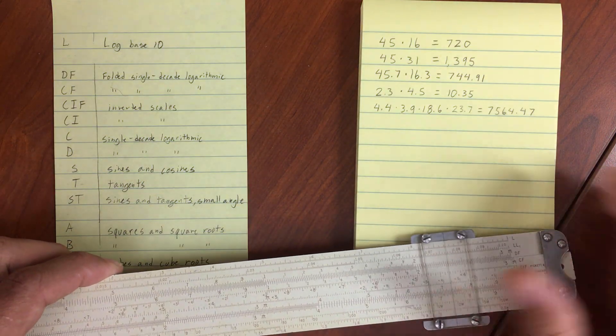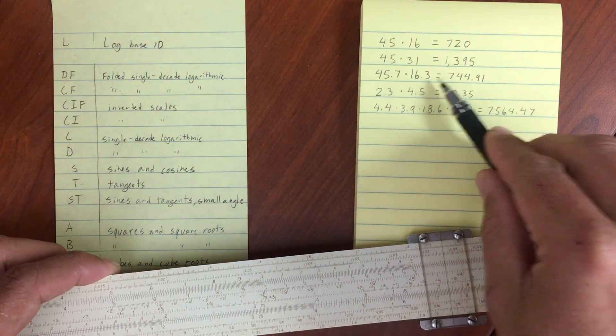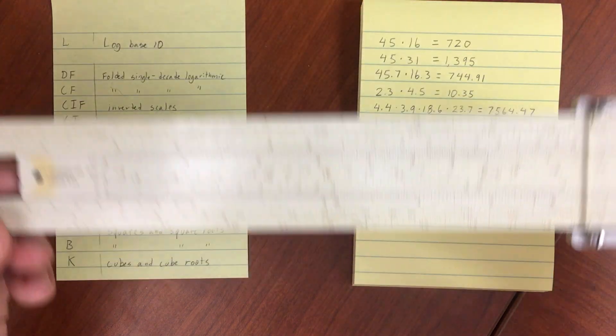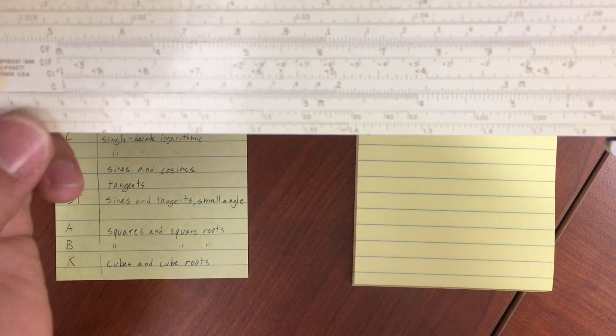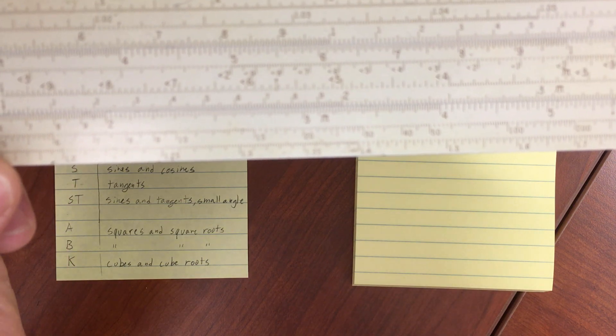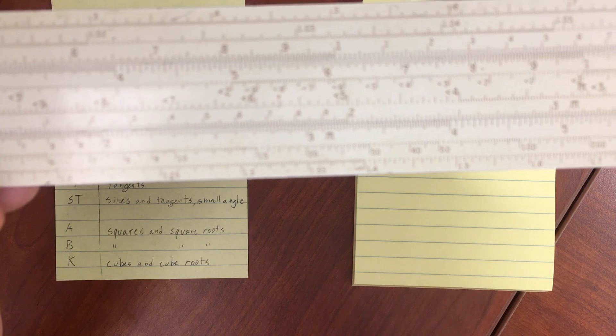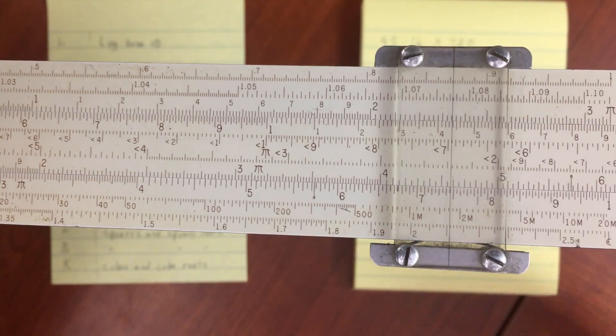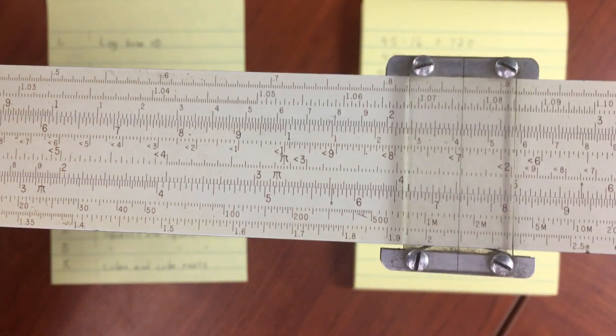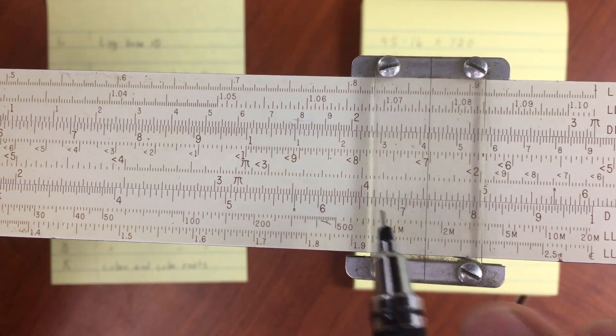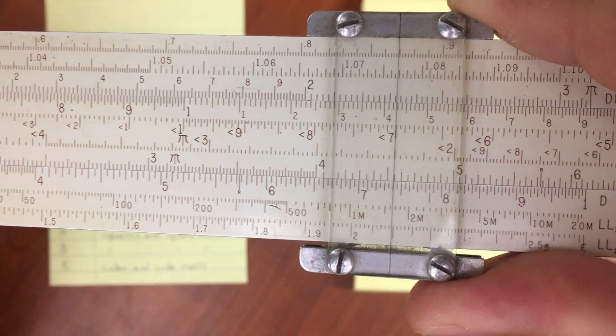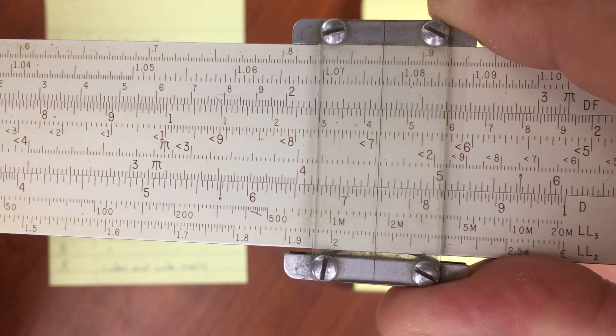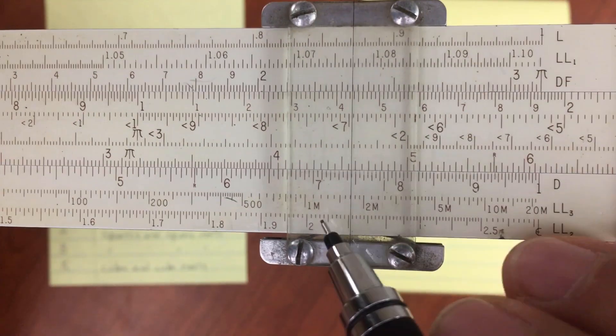Alright, for our next calculation here, we're going to be doing 45.7 times 16.3. So let's do that first number. We can do 16.3. So that's going to be 1, 6, and then 3. So right about there. And then we'll look over on our hairline over here, and we want to move to 4.57. So we've got 4.5 right there in the middle. 4.55, 4.57, right about there.